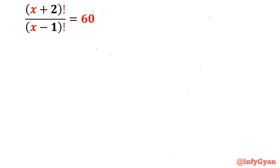Hello everyone, welcome to InfiGam. In this video, we will be solving one Olympiad based question on factorial. The equation is (x+2)! divided by (x-1)! equals 60. We have to solve for the value of x.